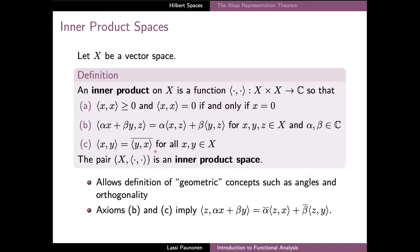Combining the last axioms also shows that the second component of the inner product has a linearity-type property, but with additional complex conjugations of the scalars. And this property is referred to as antilinearity or conjugate linearity in the literature.